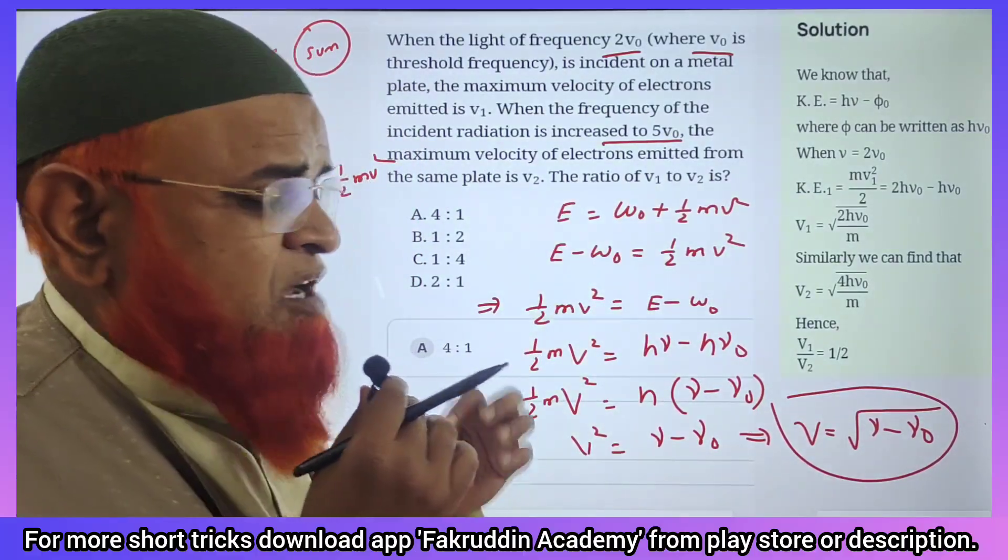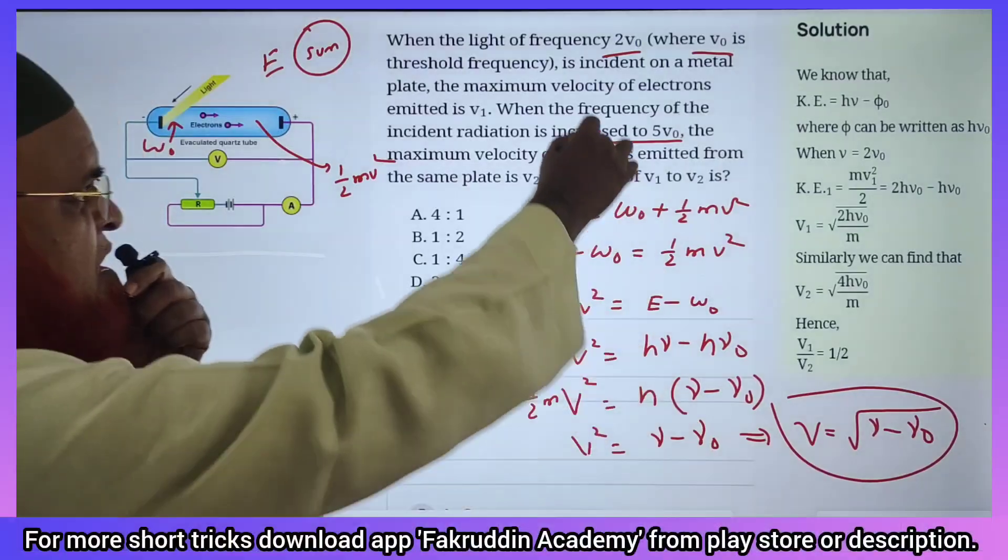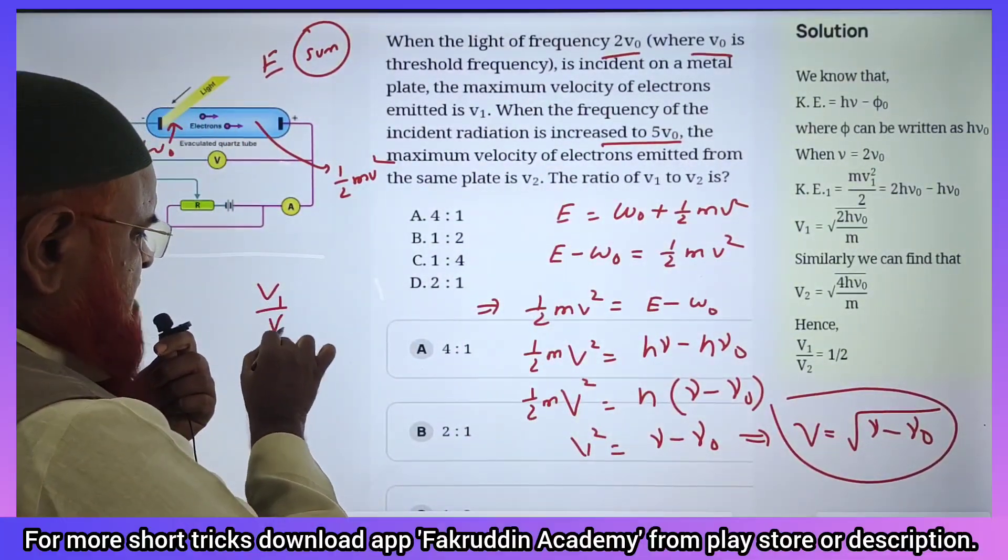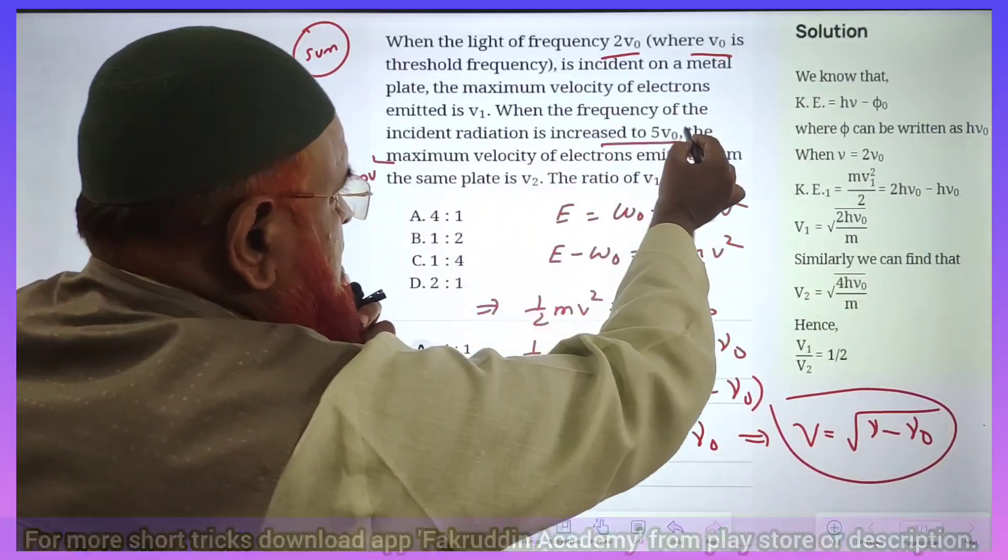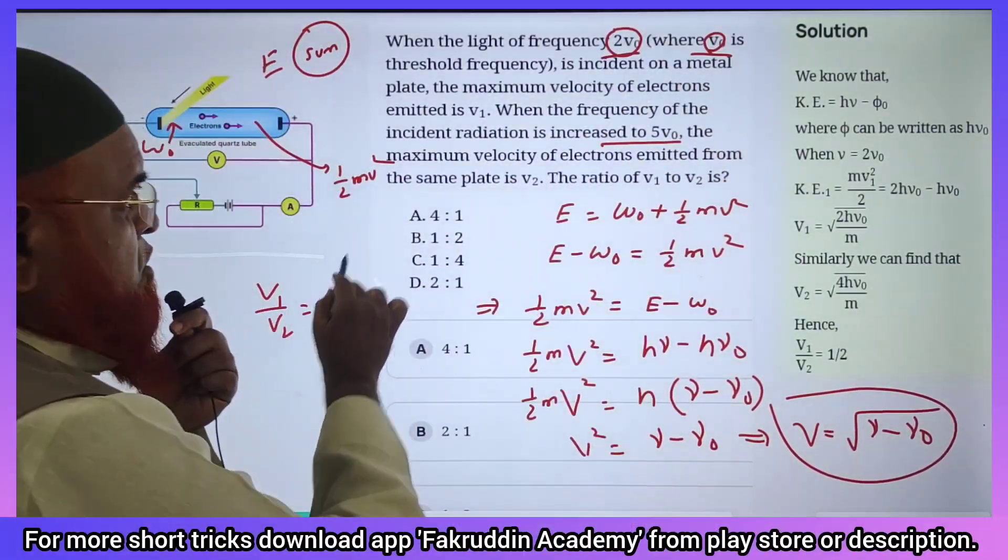Now I am going to solve this problem without this process. The simple method is, he is asking us to find out the ratio of velocities. V₁ by V₂ is equal to, you have to consider this is 2ν₀ and this is ν₀.